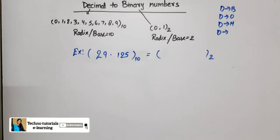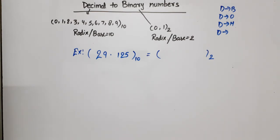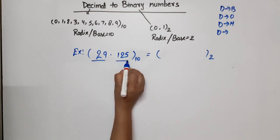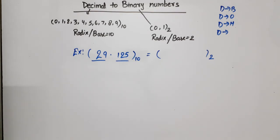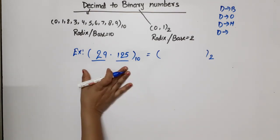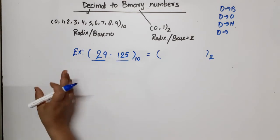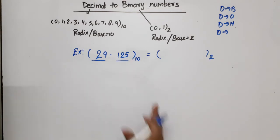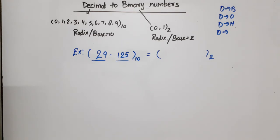When converting decimal to any base, we either divide or multiply depending on whether we have an integer or a fraction. I have taken an example with both an integer part and a fraction part. For integer we use one method, for fraction a different method, and then we combine them.